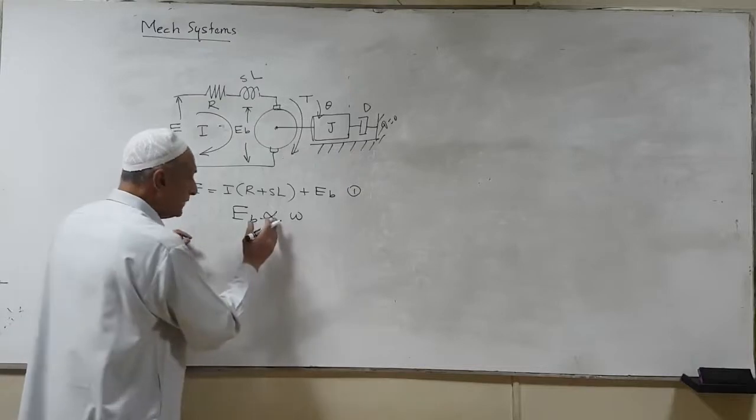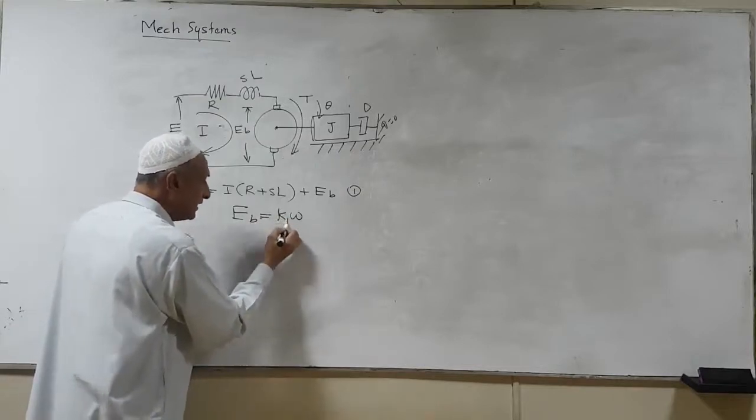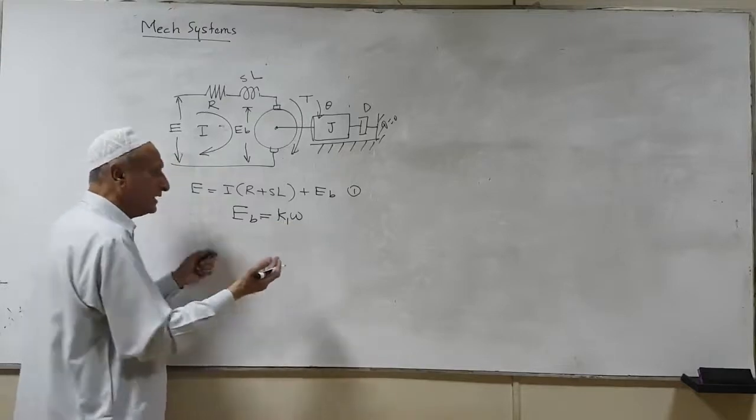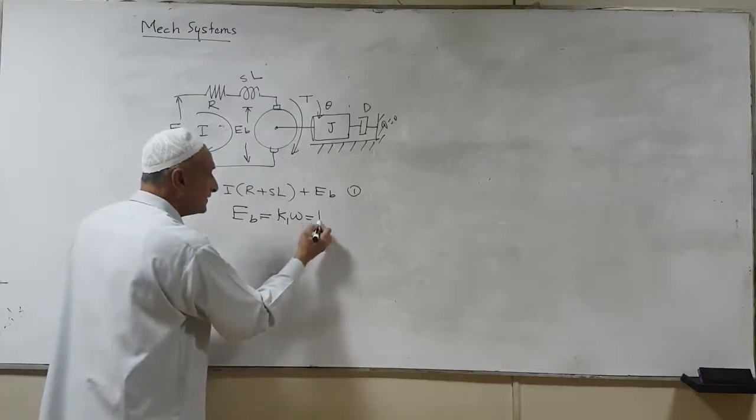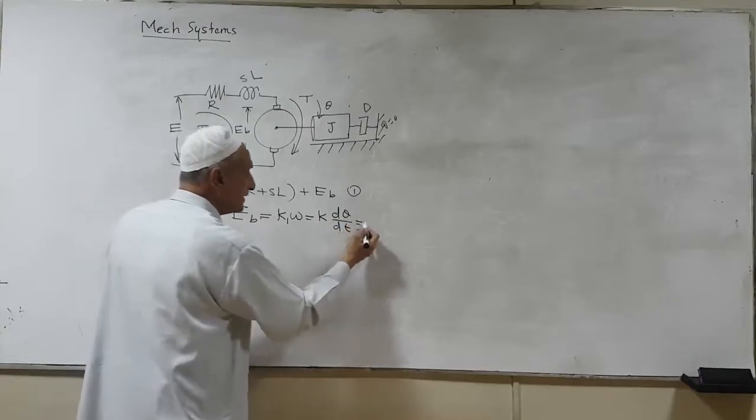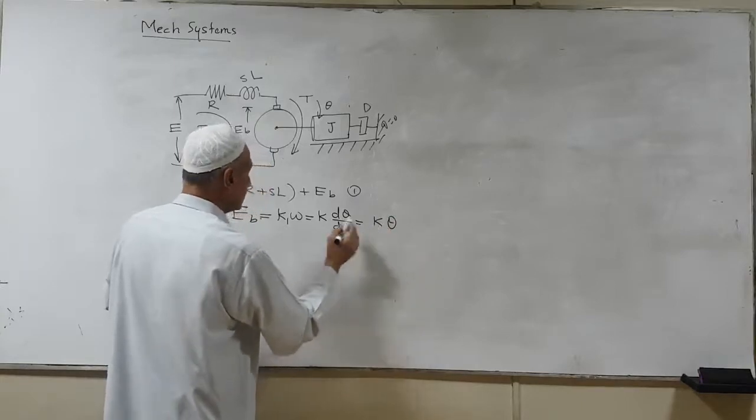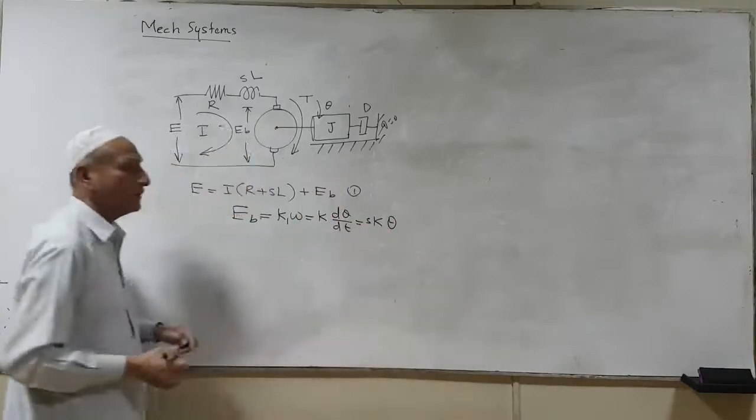So we have equal to something like K1, constant of proportionality, which is distinct, or we can say it is D theta by Dt. Or in case of Laplace transform, we can simply say K theta, or put S over here.